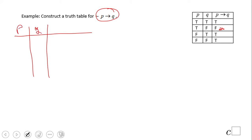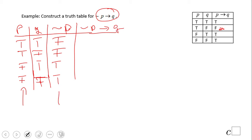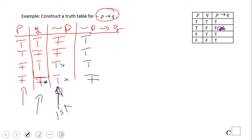P, Q — let's put all the choices: true, true, false, false. By now you should remember we have all the possible choices here. Now for non-P: we look at the P column and negate it — false, false, true, true. Now we can do non-P then Q. We look at the non-P column first, then the Q column. We look for a true paired with a false — we have two trues in non-P; which Q value is false? That one. That's the only false result; the other should be true.